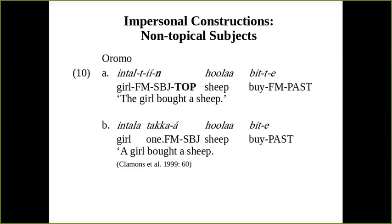In other languages such as Oromo, there is dedicated morphology that codes topicality. In 10A, 'the girl bought a sheep,' the girl is a topic — most likely indicated through measurements of topic continuity — and topicality is coded through the suffix N. Whereas in 10B, the girl is not the topic of discussion, so that suffix N is not present.